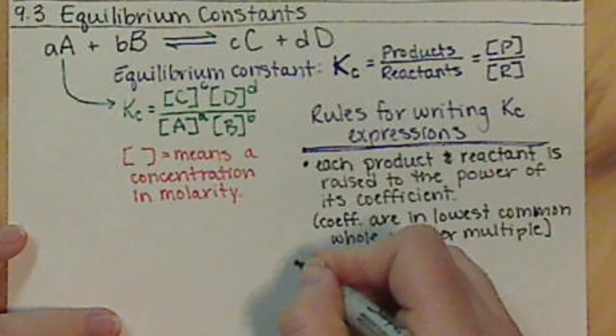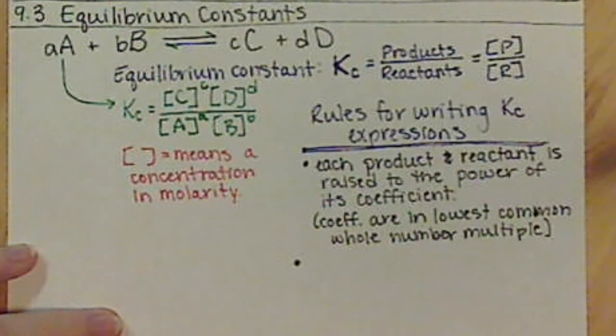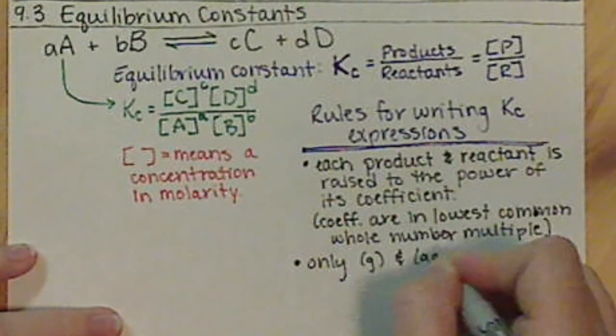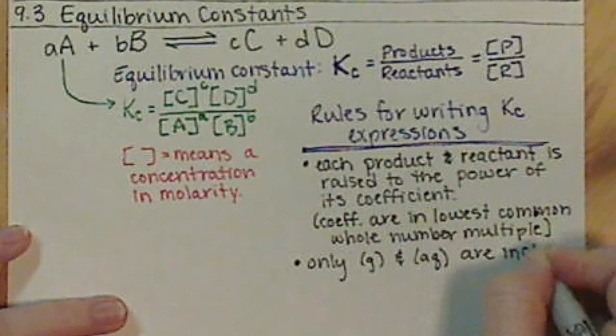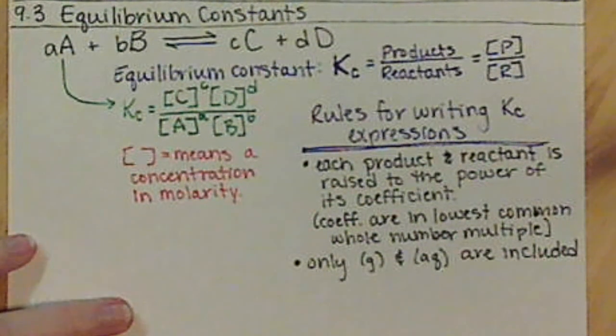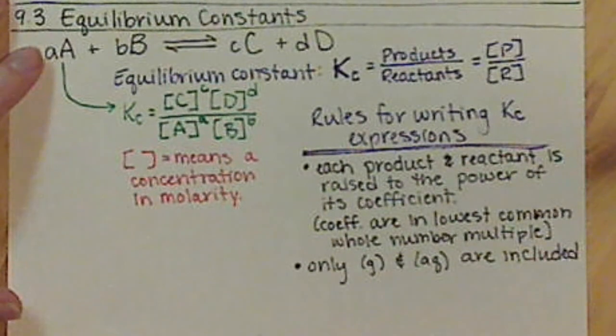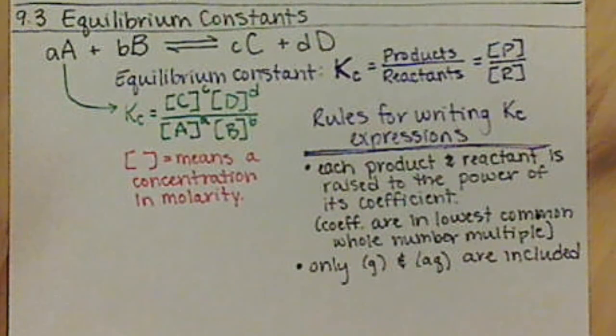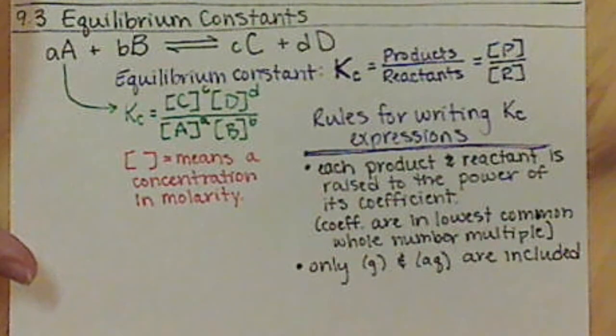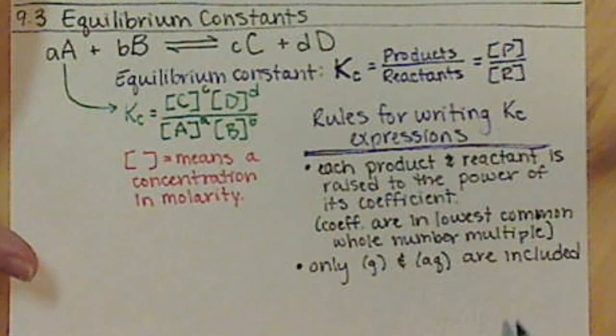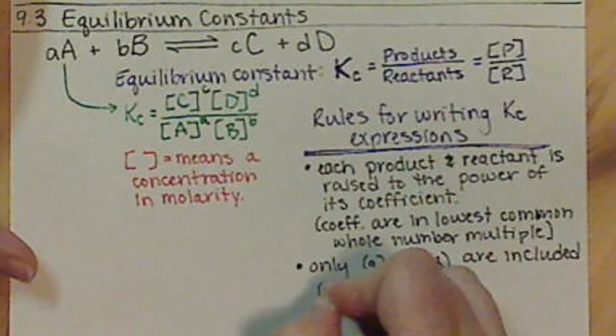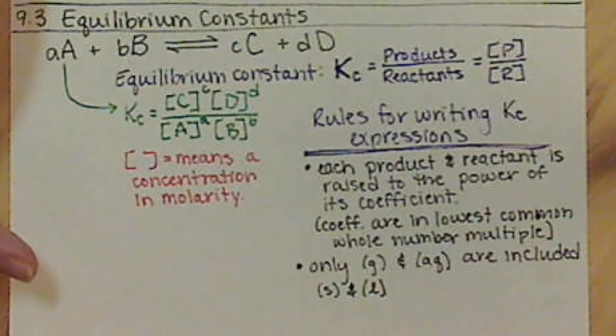A second rule or next rule for writing Kc expressions is you want to only include gas and aqueous phases. And the reason for this is because in an equilibrium, we're wanting to look at the concentrations of our products and reactants. That's our goal of using these equilibrium constant expressions. We can only include gases and aqueouses because these are the only two phases that have a concentration that can change.